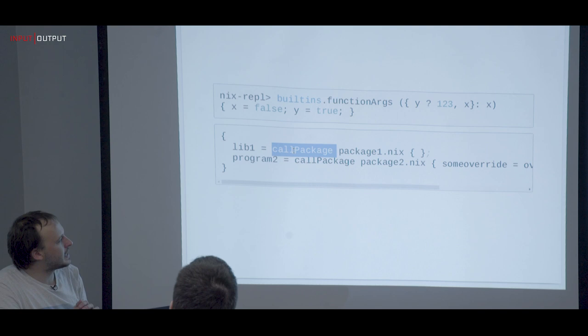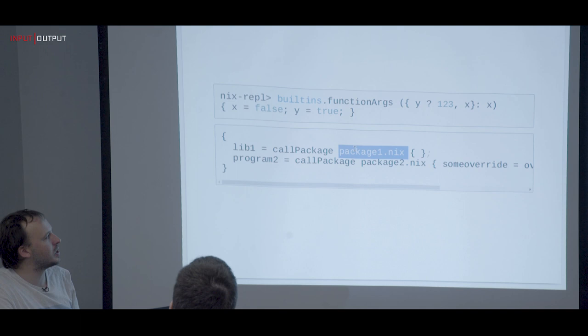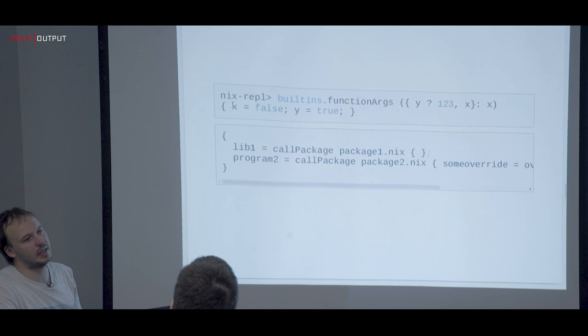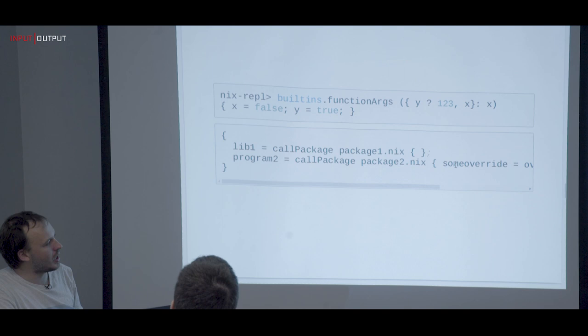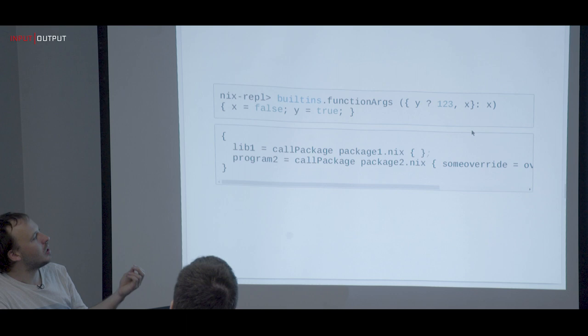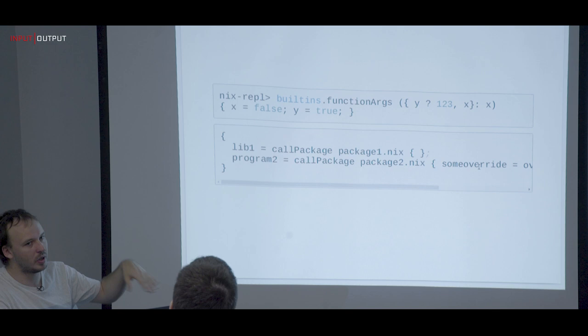What `callPackage` — something you see in nixpkgs very often — does is essentially extract all the inputs for a package and figure out which ones to fill in. So you can pass an empty attribute set, but if you want to explicitly override one, you pass it in and everything else is reflected from the function arguments while your explicit override is used.